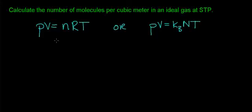In this video, we're going to use the usual form of the ideal gas law, PV = nRT, to calculate the number of molecules per cubic meter. And then in the next video, we'll use the alternative form and compare which one is easier to use.